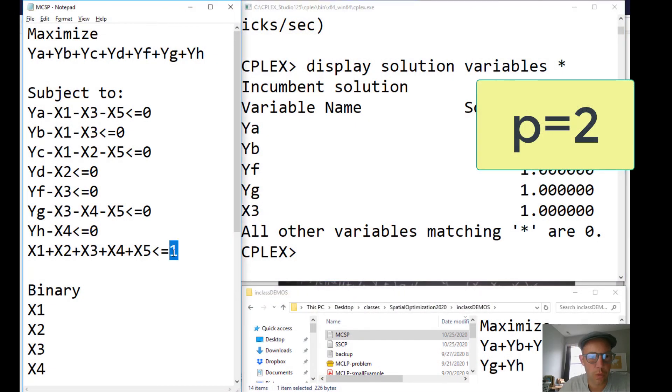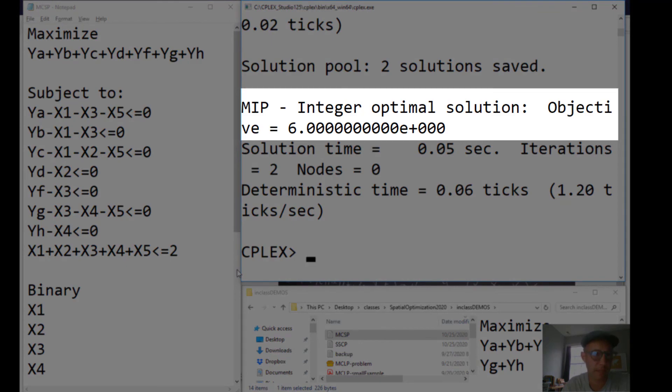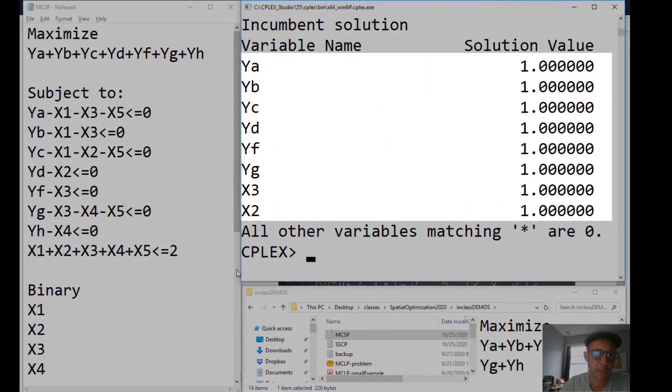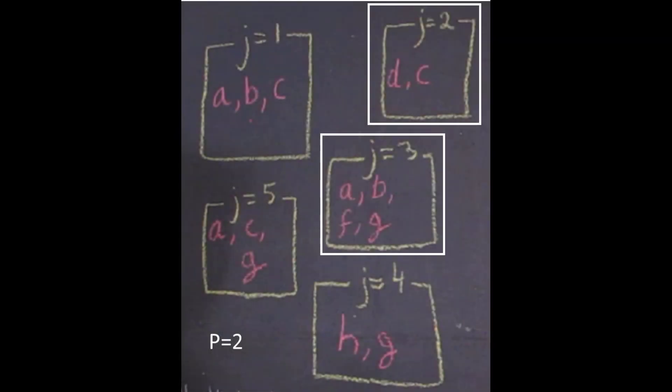Now, quickly looking at the solution, parcel J equals three is set aside, preserving species A, B, F, and J. Let's change this to two here. Let's reread this. Let's optimize it. The objective function value is six, so that means that six species can be set aside, and display the solution variables. We see that parcel two and three are maintained, and six species can be preserved. Now, we can see the two solutions, J equal two, J equal three, with species A, B, C, D, F, and G, who are being preserved.